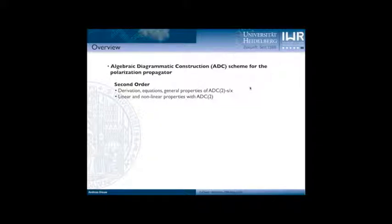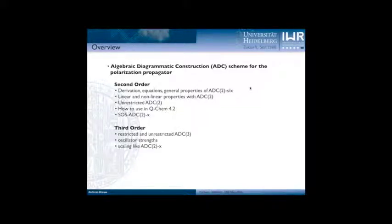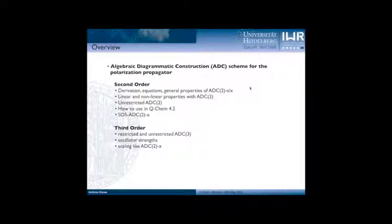I would like to show you how linear and non-linear properties are calculated, that we have an unrestricted ADC2 scheme available in QCAM, and how you can use it easily within the QCAM 4.2 framework. We also have a spin-opposite-scaled version of ADC2, in particular ADC2X in QCAM, which is a very efficient method for doubly excited states. Very recently, we also implemented the ADC3 scheme — the third order scheme — mainly done by Philip Habach and Michael Wormit, available in restricted and unrestricted versions, giving quite accurate energies and oscillator strengths, and it is not significantly more expensive than ADC2X.